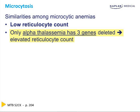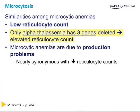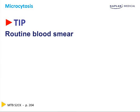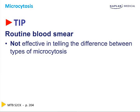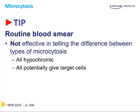Microcytic anemias are due to production problems, so they're nearly synonymous with decreased reticulocyte counts. A routine blood smear is simply not effective in telling the difference between the different types of microcytosis — they are all hypochromic, and potentially all can give target cells. Target cells may be most common with thalassemia, but they all can give hypochromic cells. Reticulocyte count and smear are not going to differentiate them. You start with microcytosis, then get on to the iron studies.